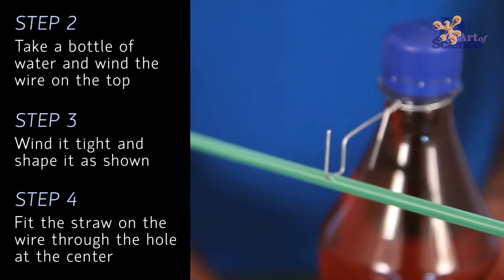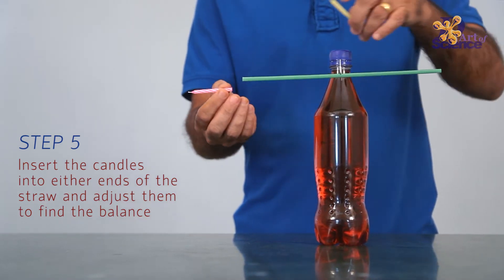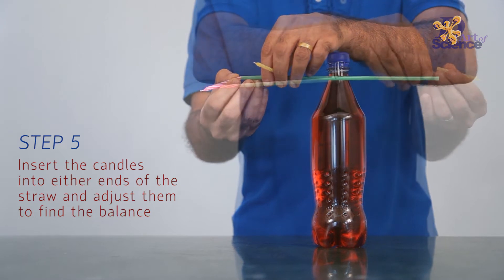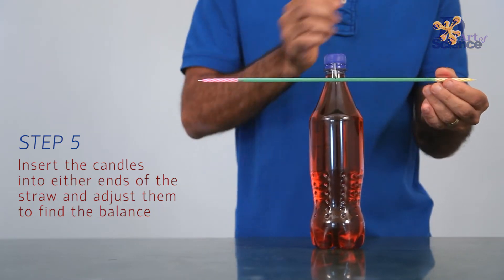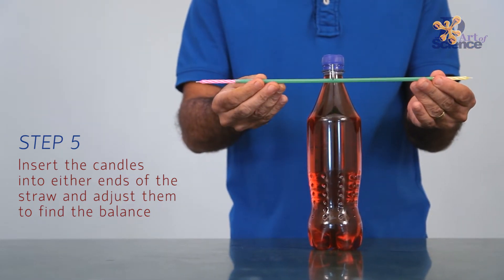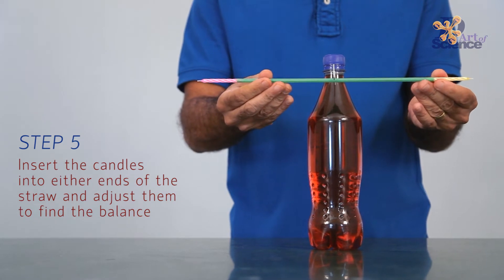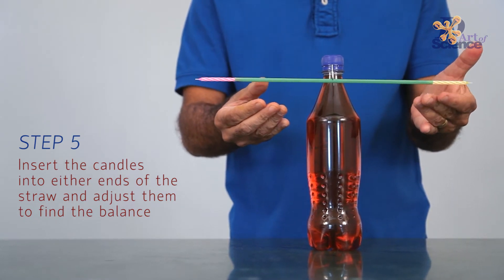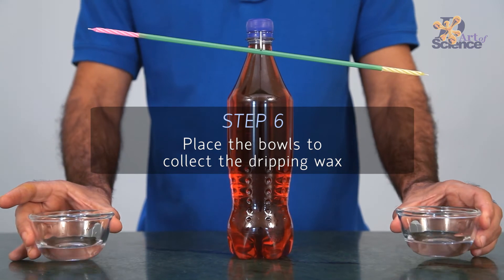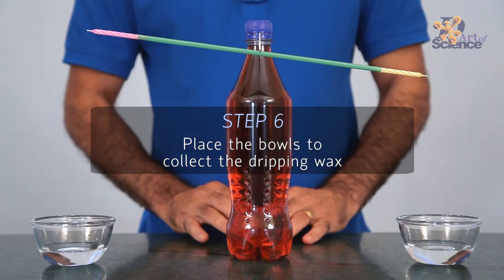Now how we get the seesaw motion is simply through balance. Initially, both candles have approximately the same weight and so the system is balanced. The key to imbalance and hence the seesaw effect is to light the candles at different times.